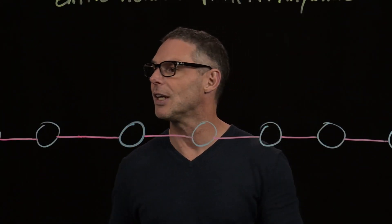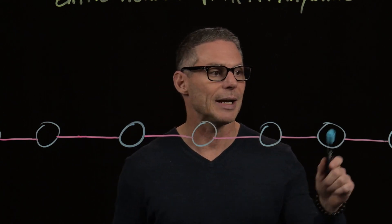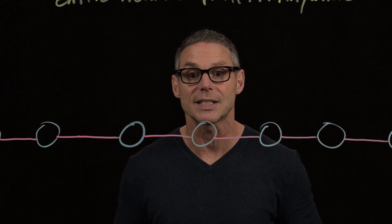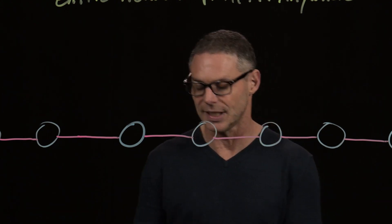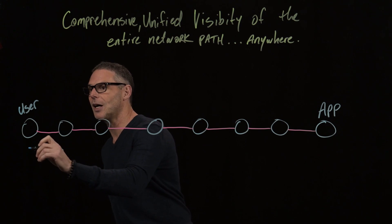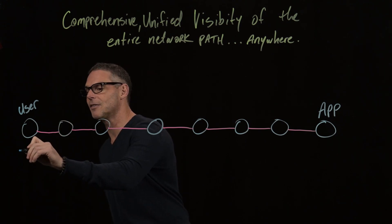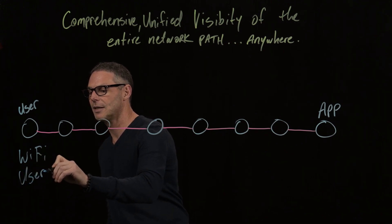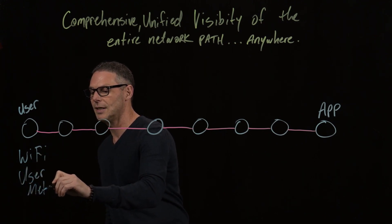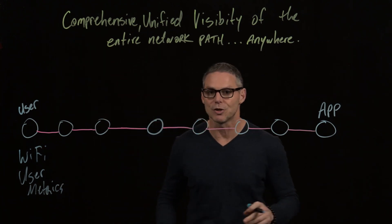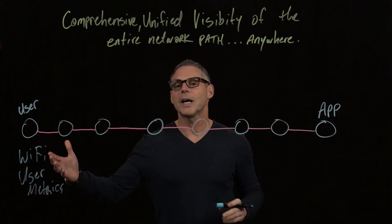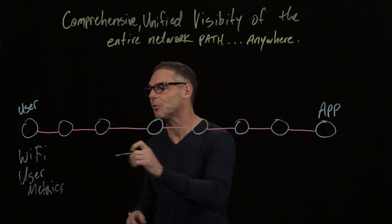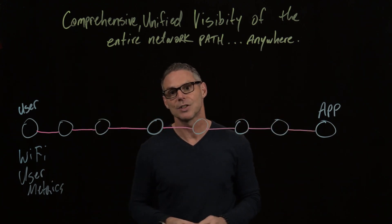It's about the data you collect along the entire network path, what you do with that data, and how you present it as actionable insights to network operations teams. From the user perspective, we can collect Wi-Fi health and user metrics like laptop processes, CPU, and memory — so we can isolate and understand if any performance degradation along this entire network path is happening local to the user.